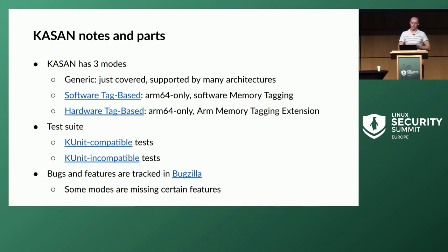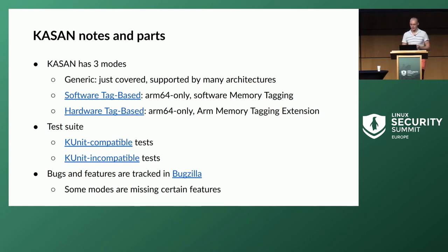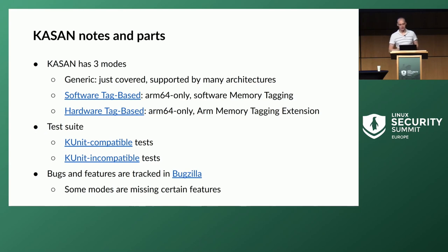There is a KASAN test suite that checks KASAN can detect certain types of memory bugs. Most tests are ported to the KUnit framework, but a few are not. One test checks copy_to_user and copy_from_user functions, which require a user space component, and KUnit tests run from a kernel thread with no user space component — so that's still unclear. Unlike most kernel subsystems, KASAN does use Bugzilla to track bugs and features, and there is still quite a lot of work to make KASAN detect everything it could potentially detect.